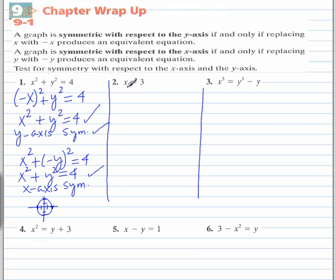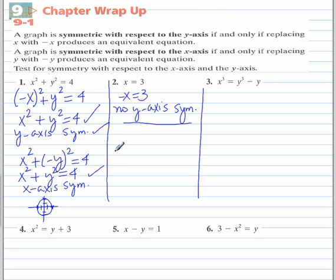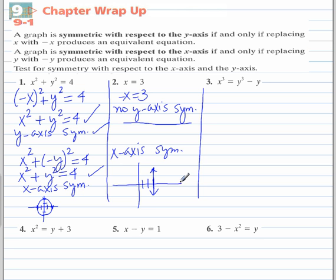Now for number 2, if we replace x with negative x, we do not end up with the same equation as we started out with. So there is no y-axis symmetry. But since there is no y, when we replace the non-existent y with negative y, we end up with the same equation. So there is x-axis symmetry. This is an equation of a vertical line going through x equals negative 3. If you fold the graph on the x-axis, they overlap on one another.